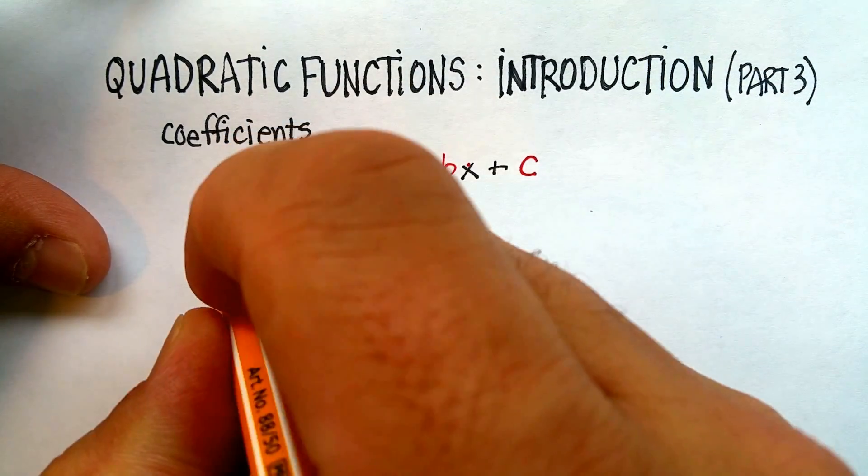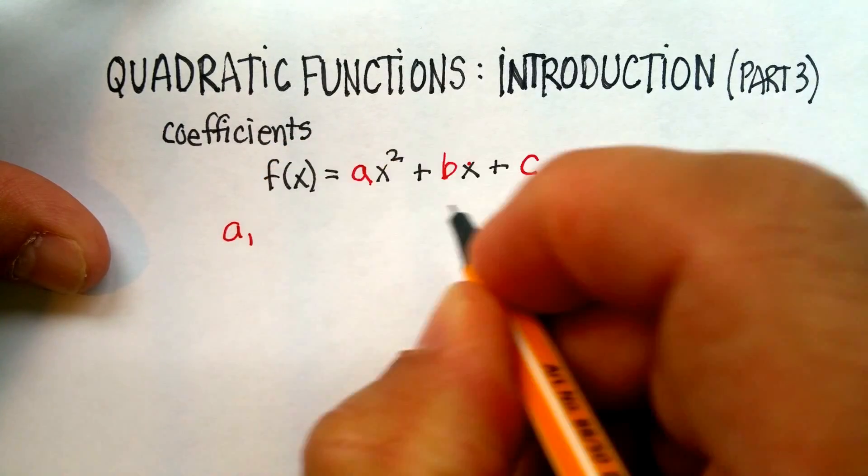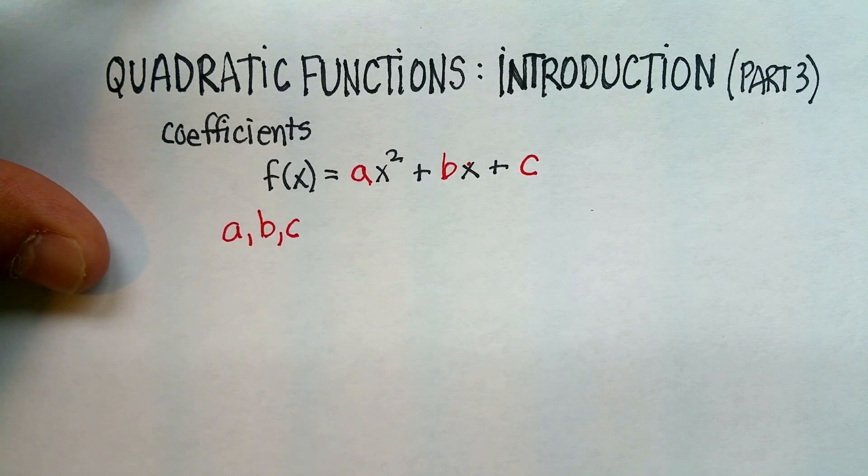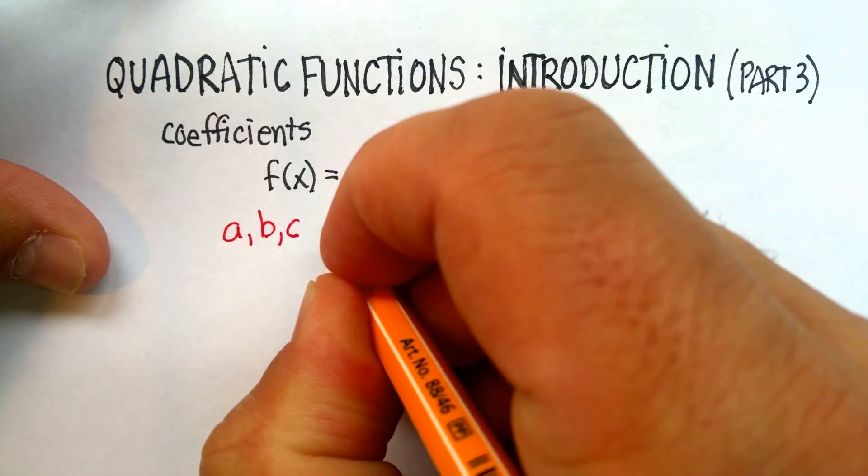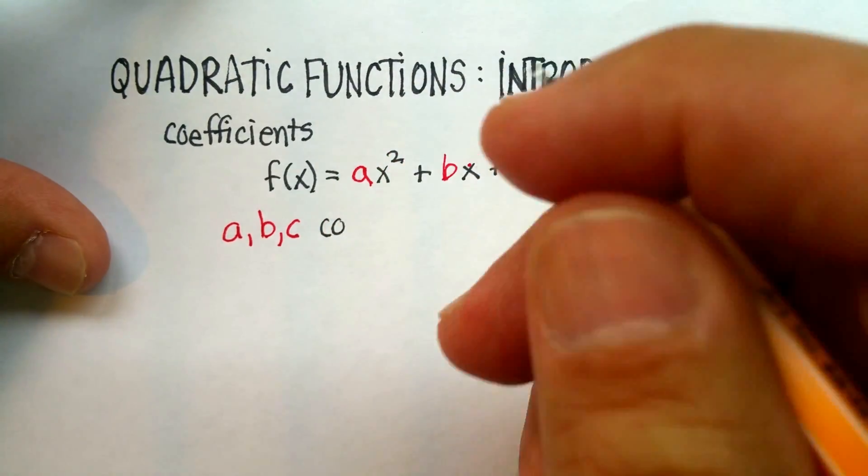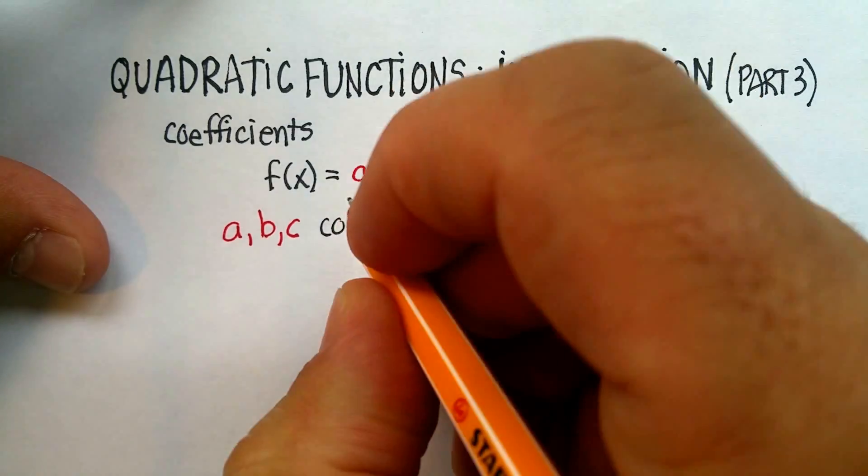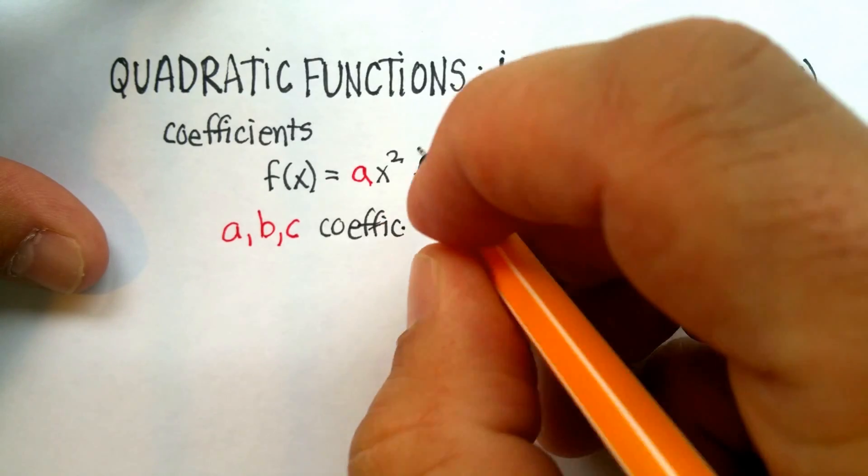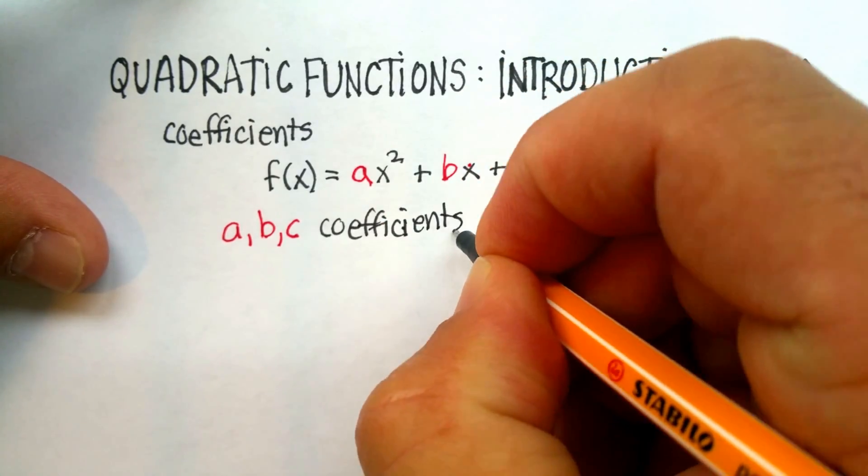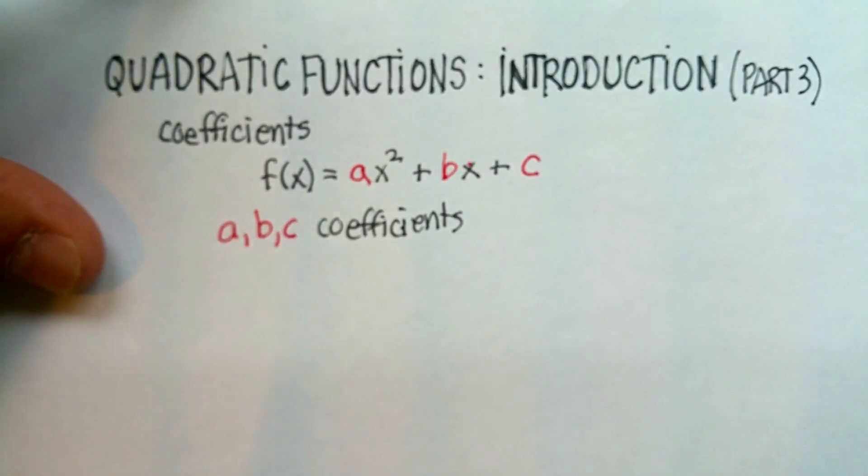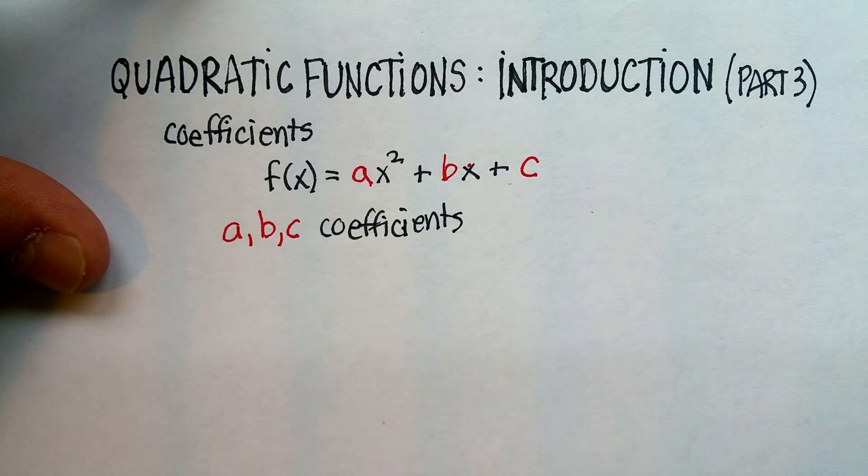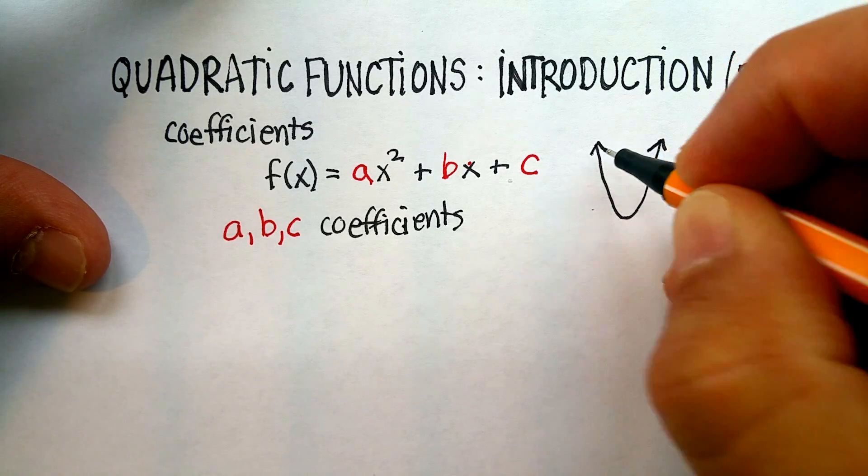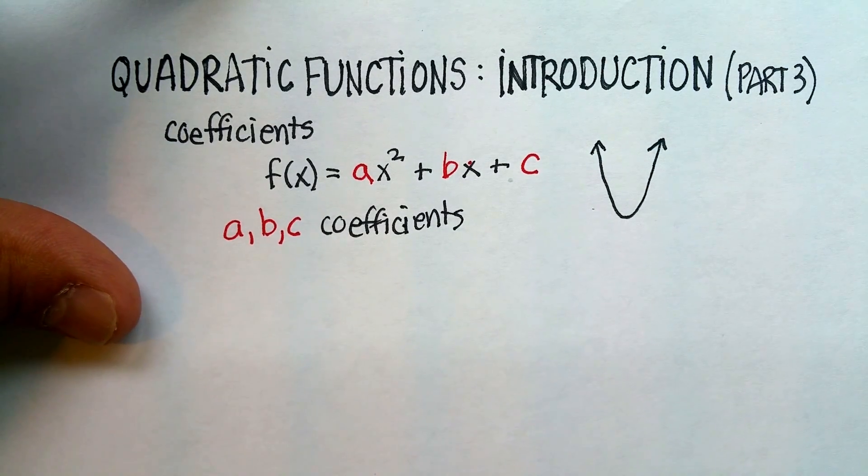The a, the b, and the c, technically not c, but we're going to include it in coefficients anyway. The a, the b, and the c are what we call the coefficients for a quadratic function. Now, what is a coefficient? The a, the b, and the c actually tell us something about the quadratic or the parabola itself, and that's what I want to go over in this particular video.